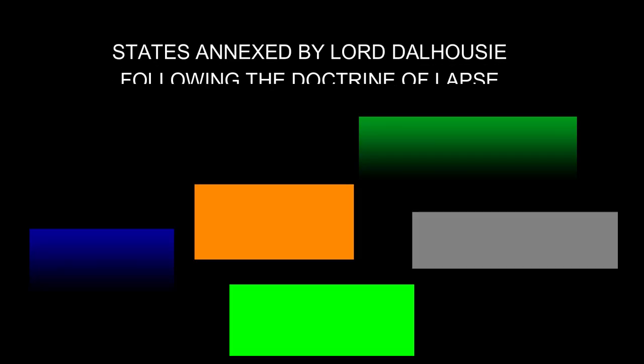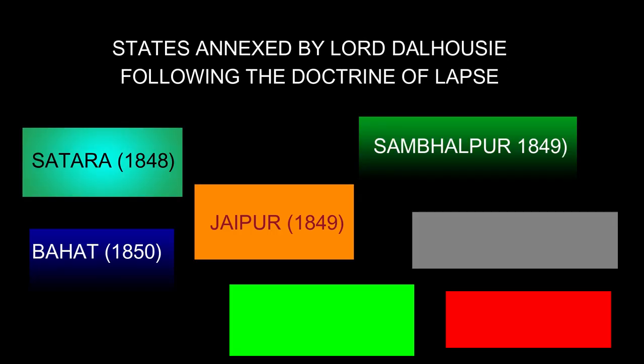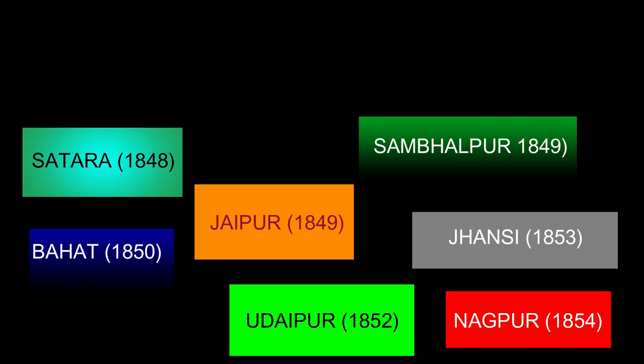Here you may check out the states which were annexed by Lord Dalhousie as part of the Doctrine of Lapse: Satara, Jaipur, Sambhalpur, Baghat, Udaipur, Jhansi, and Nagpur.